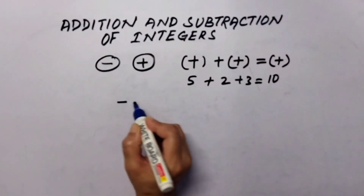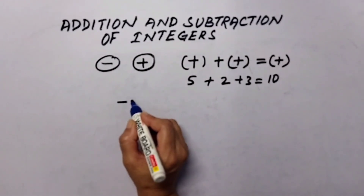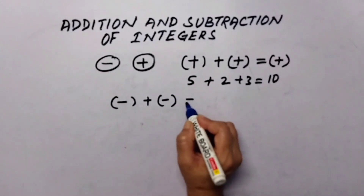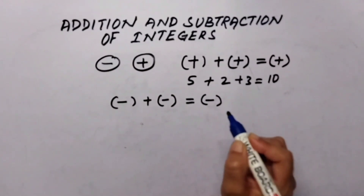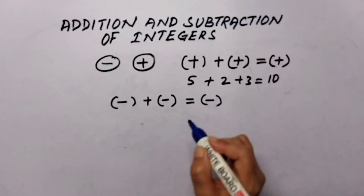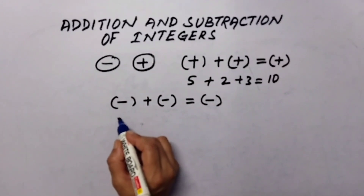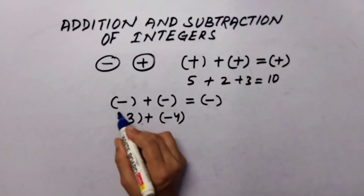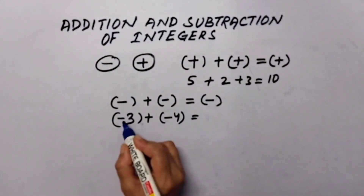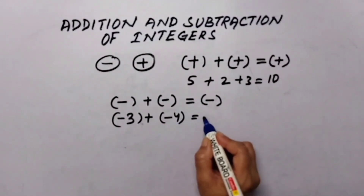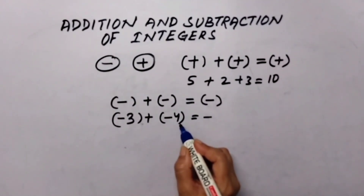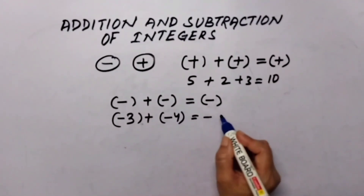But when we add two or more negative integers, what should the sum be? The sum should also be one negative integer. Let us take one example: negative three plus negative four. We keep the same sign for the sum and add only the numerical values: three plus four equals seven, so the answer is negative seven.